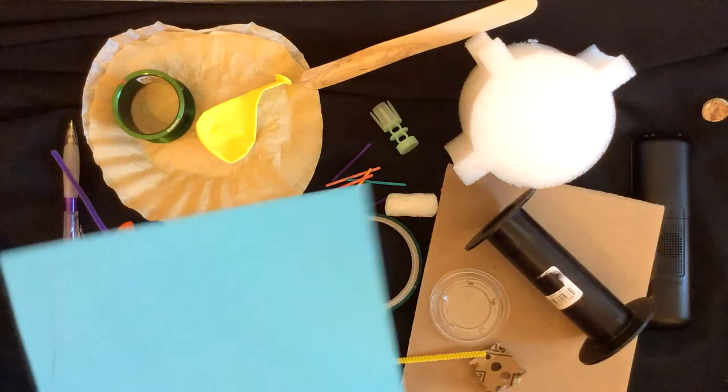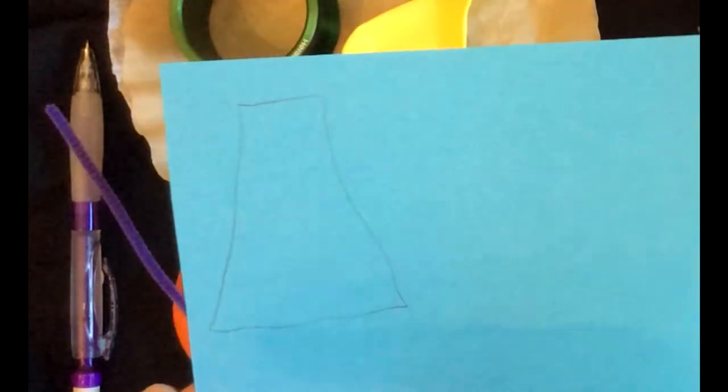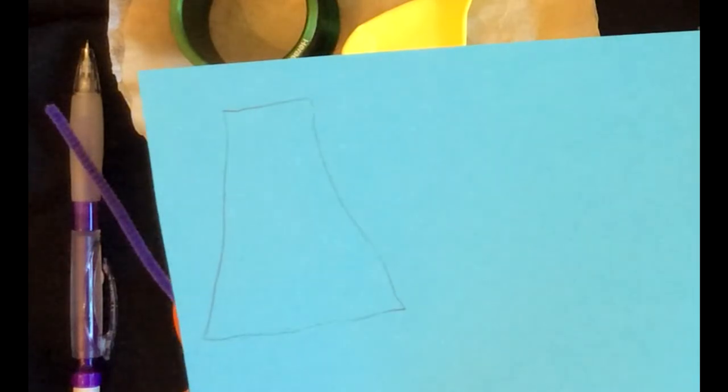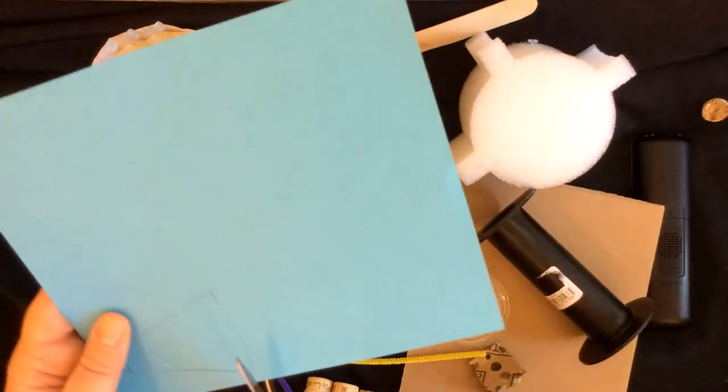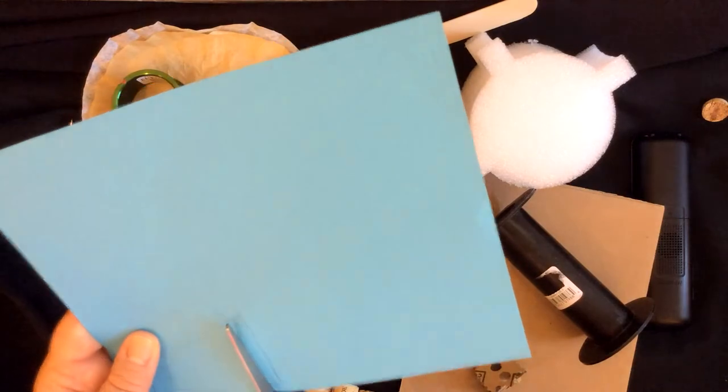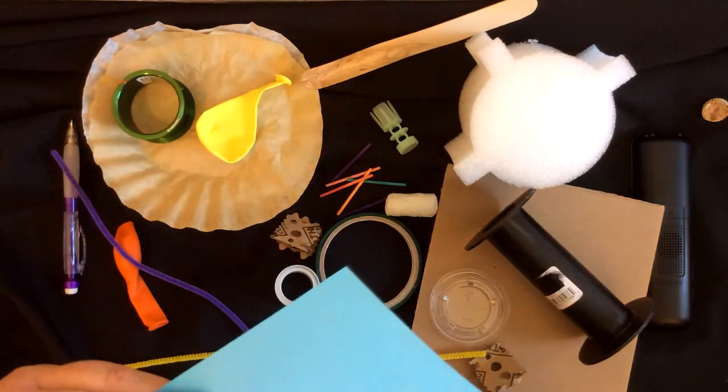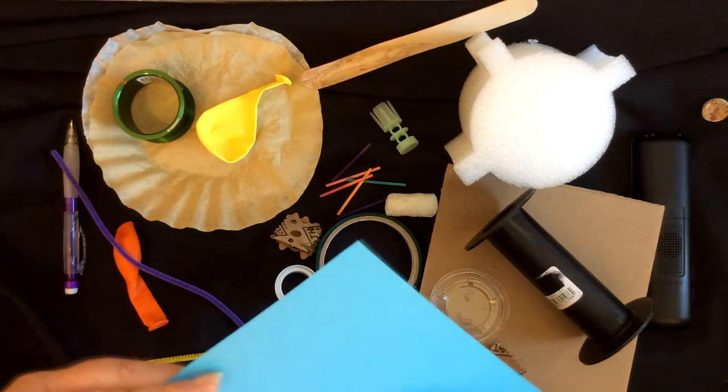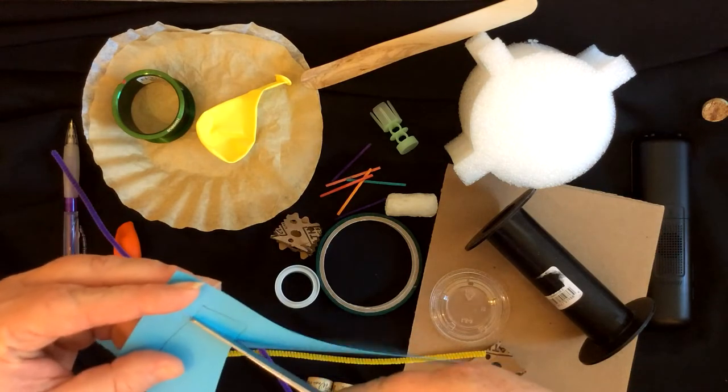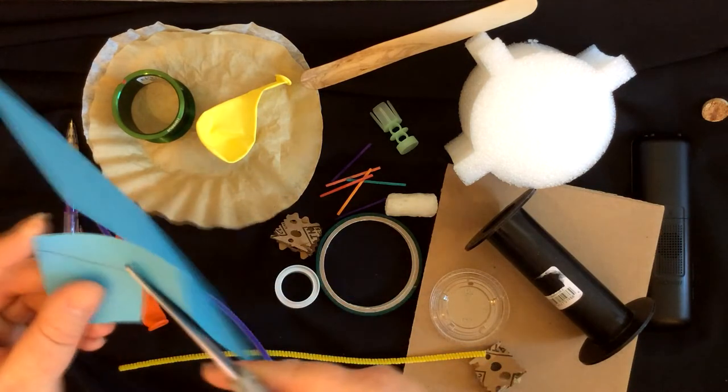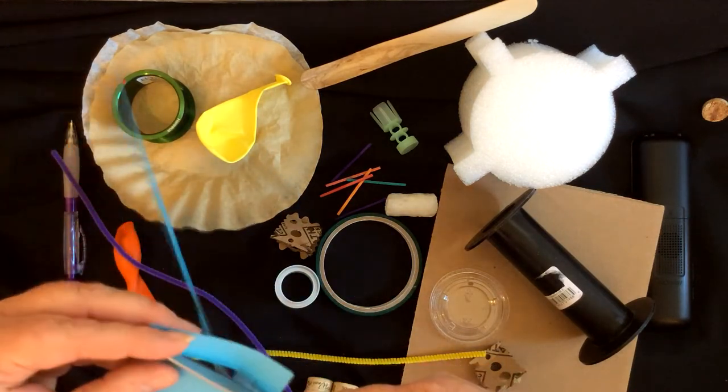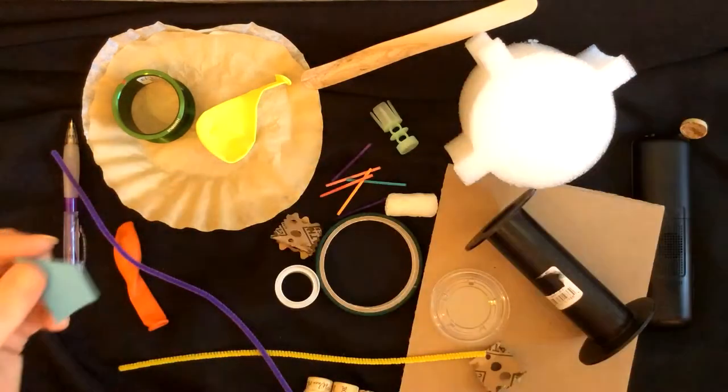Then I took a piece of paper and I drew almost like the shape of a volcano on it. So I'm going to cut that out, a little smaller than I drew it.